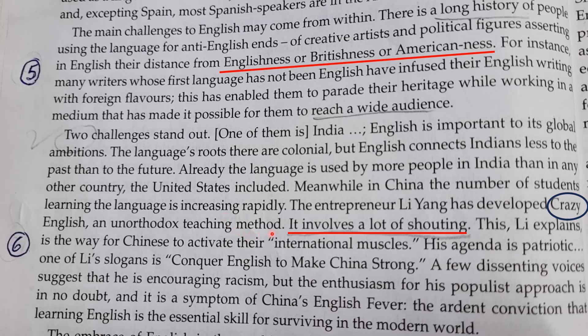The entrepreneur Lee Yang has developed 'Crazy English,' an unorthodox teaching method. He is adding local flavors — this teacher involves a crazy English teaching method which involves a lot of shouting. He makes his students shout a lot. Lee explains this is the way for Chinese to activate their international muscles. Speech does depend upon muscular movement — you have many speech organs which have to move properly to pronounce sounds correctly. His agenda is patriotic and his slogan is 'Conquer English to make China strong.' That sounds crazy, but indirectly he is accepting the supremacy of English.